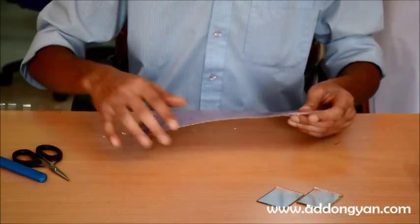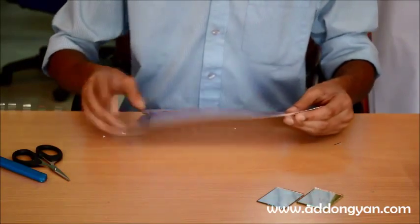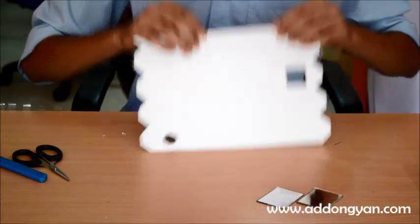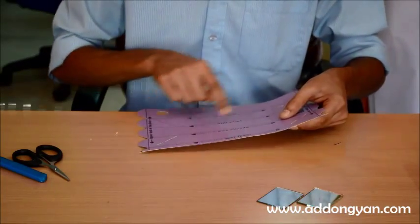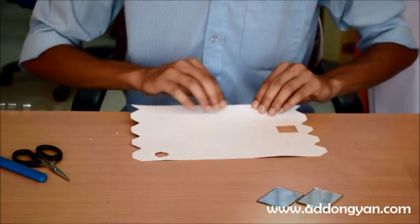Once you are done with the cutting section, you can start folding it to form like a cuboid. So follow these instructions: first, second, third fold, and fold along the dotted line.